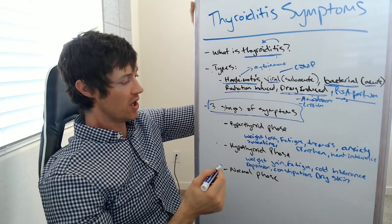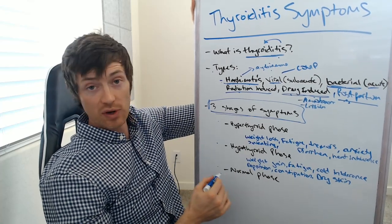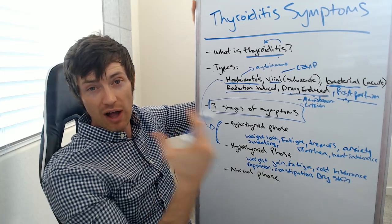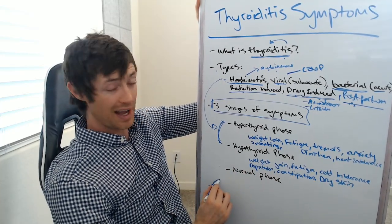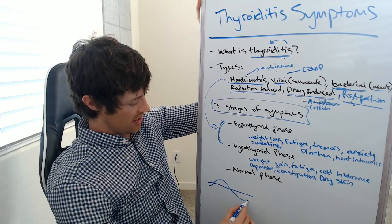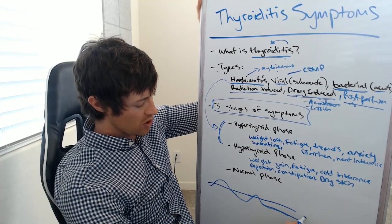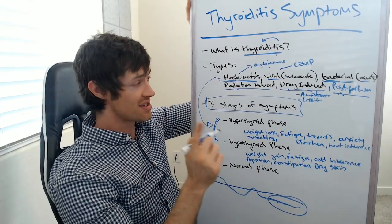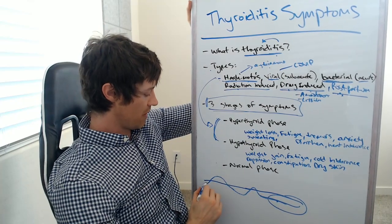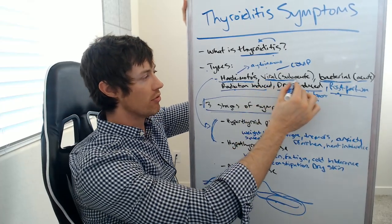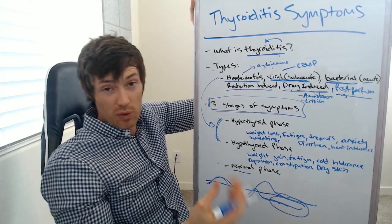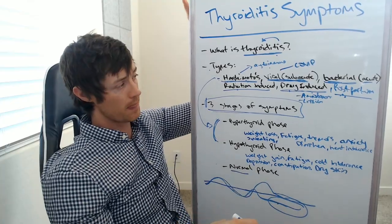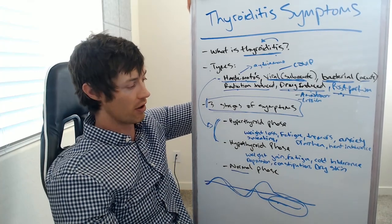Let's take Hashimoto's as an example. There are three possible phases: a hyperthyroid phase, a hypothyroid phase, and a normal — sometimes called euthyroid — phase. In Hashimoto's, it almost always starts by balancing between these. You might have a hyperthyroid phase for a couple of months, come down to normal, go low, then fluctuate up and down, and eventually stay low. Hashimoto's almost always ends up in low thyroid function for most people, unless treated early. Viral subacute thyroiditis, by contrast, may go high then low but will completely resolve and end up normal.